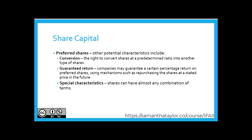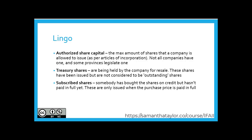Let's look at one more thing before a question: the lingo. Authorized share capital is the maximum amount of shares that a company is allowed to issue, as stated per the articles of incorporation. Treasury shares are held by the company for resale — these are shares that have been issued but are not considered to be outstanding shares with a shareholder. Subscribed shares are shares someone has bought on credit but hasn't paid for in full yet; these are only issued when the purchase price has been paid in full.